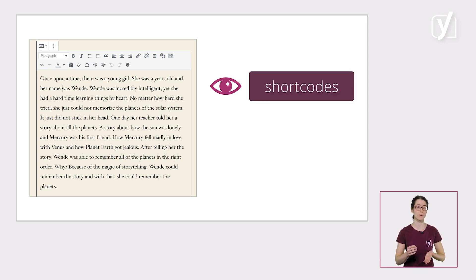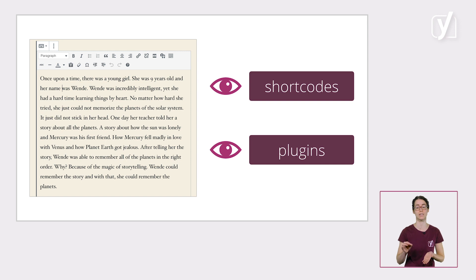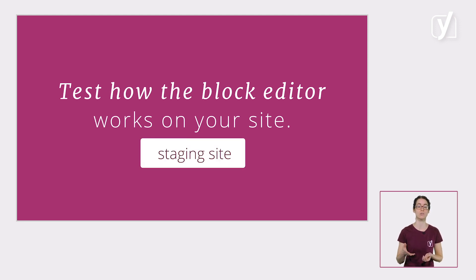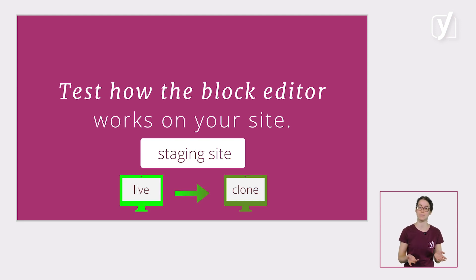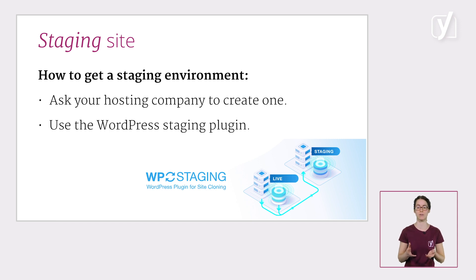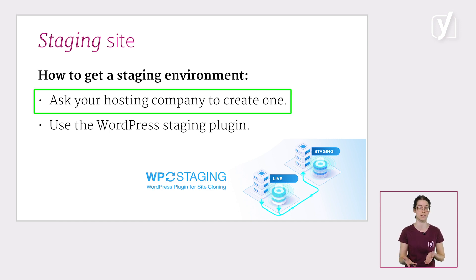Clicking edit on any existing post or page will automatically transfer the content to a classic block in the block editor. However, if you've used shortcodes in your pages and posts, it's wise to check those. And you should also check if all the plugins you have installed are still working correctly. If you want to make the switch to the block editor, we'd advise you to first test how the block editor works on your site. You can do that by using a staging site, also called a staging environment. A staging site is basically a clone of your live website, which allows you to test any changes or new features that you plan to implement. If something should go wrong with that new feature, it won't affect your live site. The easiest way to get a staging environment for your WordPress website is to ask your hosting company to create one for you. Most hosting companies can do this for you.